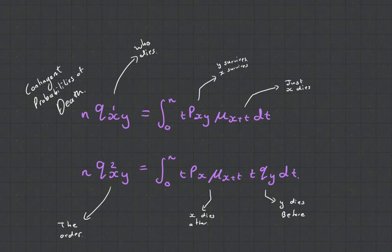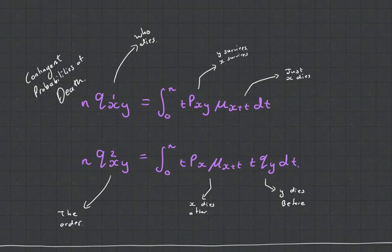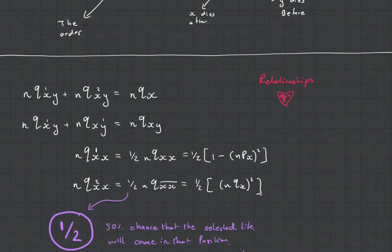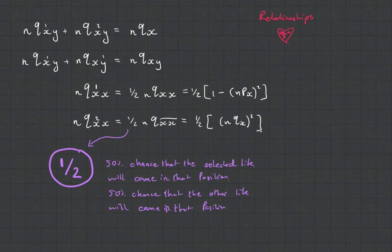Finally, what I want to talk about in this video is the relationships between these contingent probabilities. Interestingly, the probability that X dies before Y at time N plus the probability that X dies after Y at time N is equal to the probability that X dies before time N.